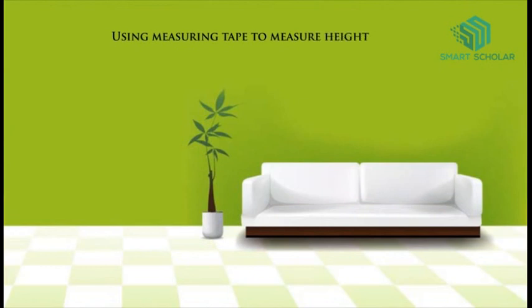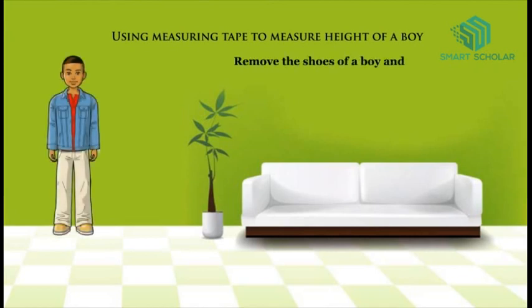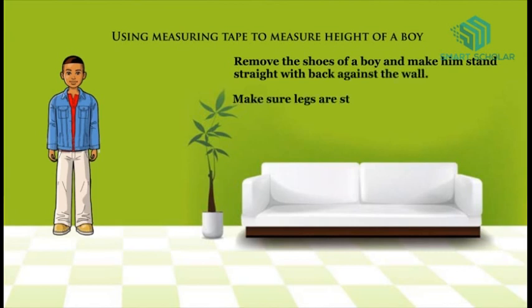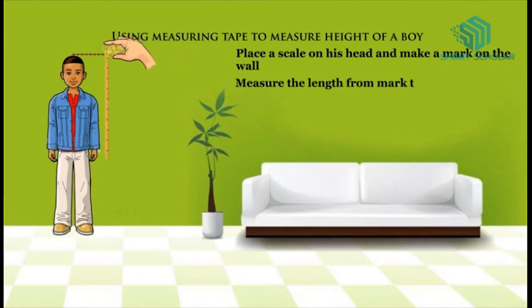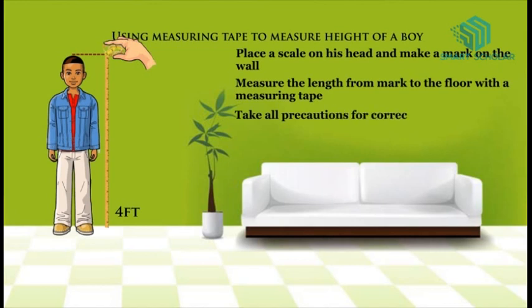Using measuring tape to measure height of a boy. Remove the shoes of a boy and make him stand straight with back against the wall. Make sure legs are straight, arms are at sides and shoulders are level. Place a scale on his head and make a mark on the wall. Measure the length from mark to the floor with a measuring tape. Take all precautions for correct measurement of length. Record the height of a boy with the help of an inch tape.